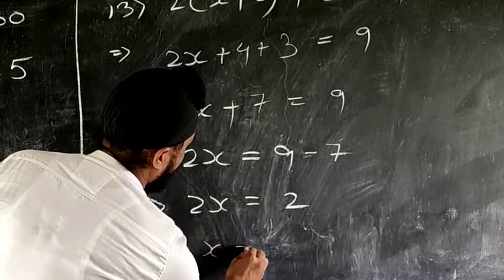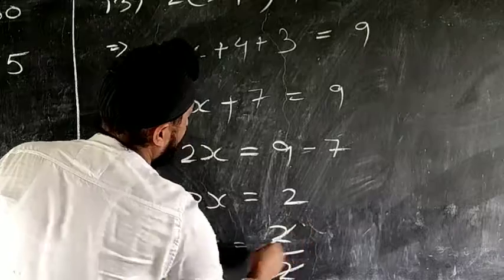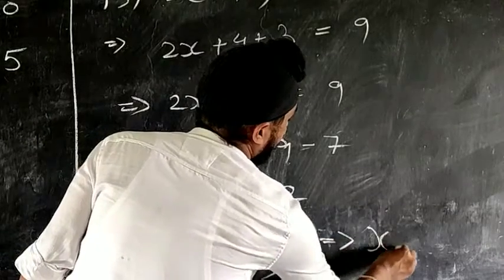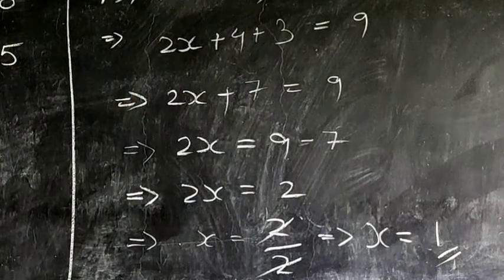So the last step: x equal to 2 by 2, so 2 and 2 will be cancelled, so the value of x equals 1. So this way these two sums are done.